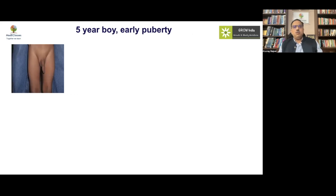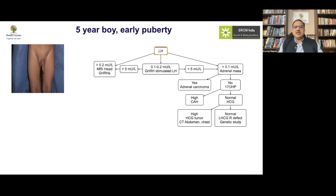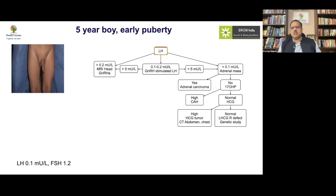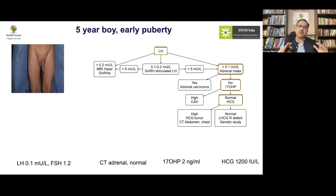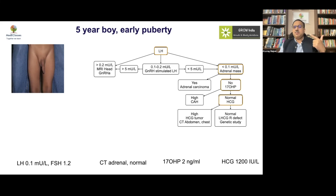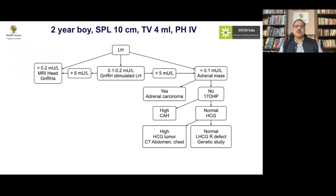A five-year-old boy with significant penile enlargement but testicular volume of only 3–4 mL and low LH suggested peripheral precocious puberty. CT adrenal imaging and 17-hydroxyprogesterone were normal, but HCG levels were high — a classical presentation of an HCG-producing tumor. The testicular volume was slightly larger than seen in CAH due to Leydig cell hyperplasia. Further evaluation identified a germinoma as the cause.